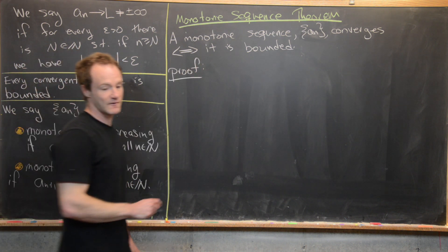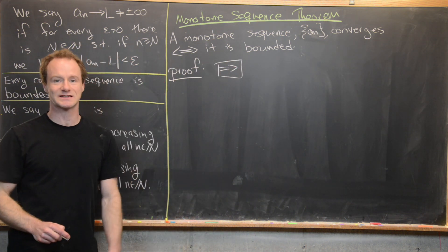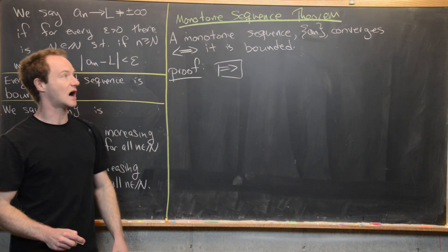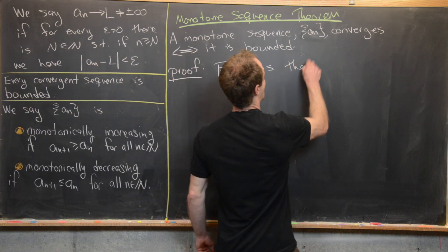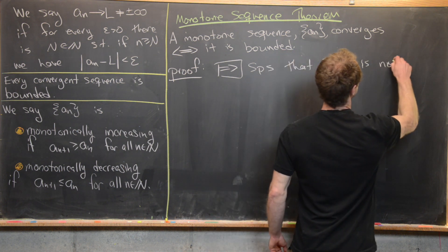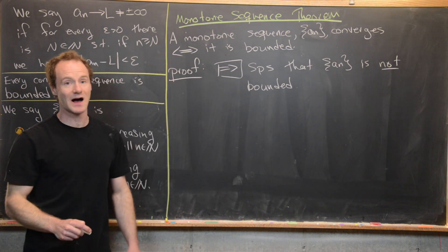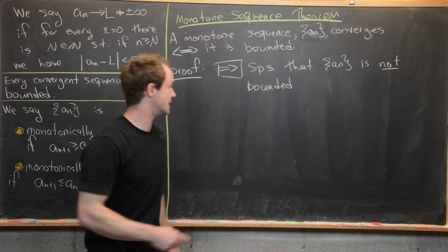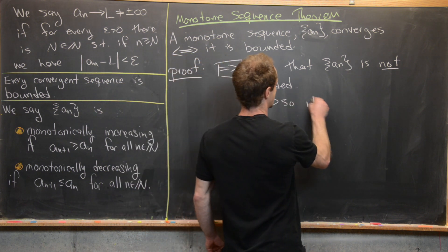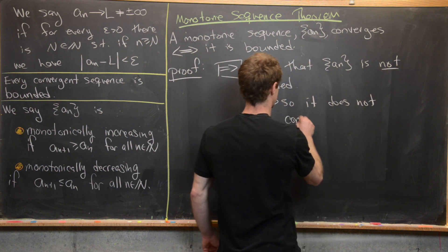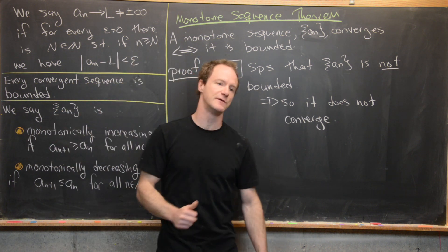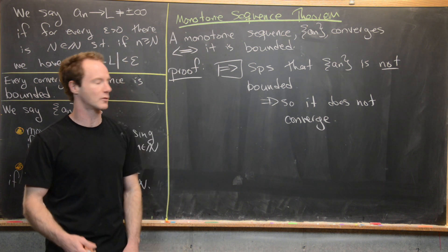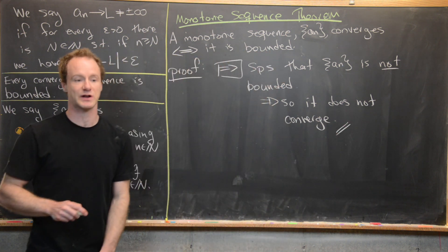We'll first handle the forward direction using the contrapositive. We're going to suppose that the sequence is not bounded and argue that it cannot converge. So suppose a_n is not bounded. But if a_n is not bounded, we know it does not converge because we proved earlier that every convergent sequence is bounded. Notice if it did converge, that would imply it was bounded — contradicting our assumption. So the proof is pretty quick in this direction.